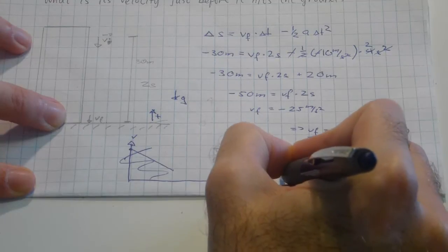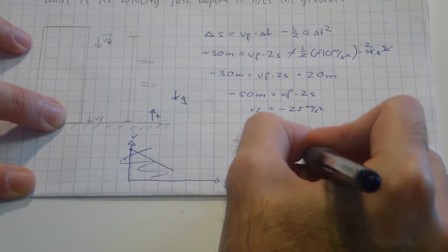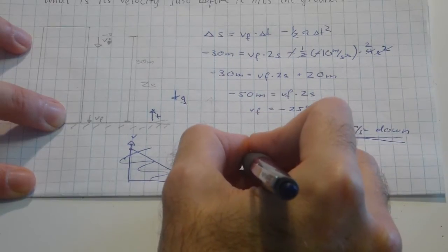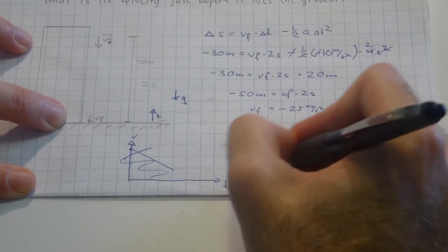There is some time, and we have some initial negative velocity and some final negative velocity.